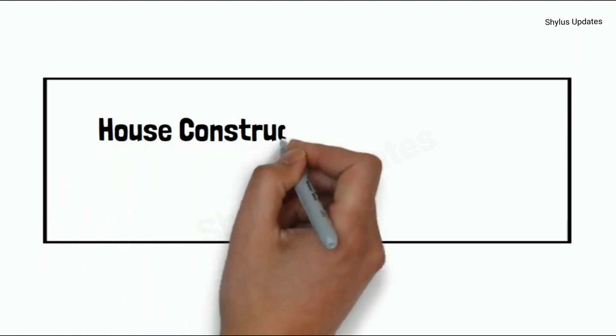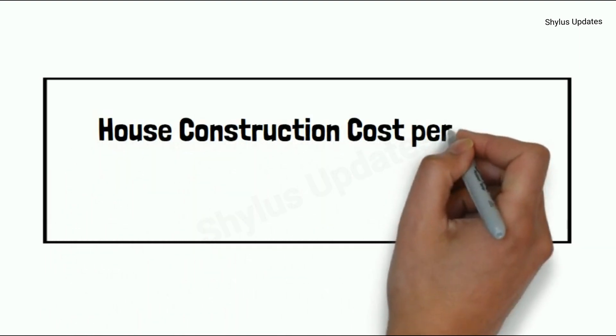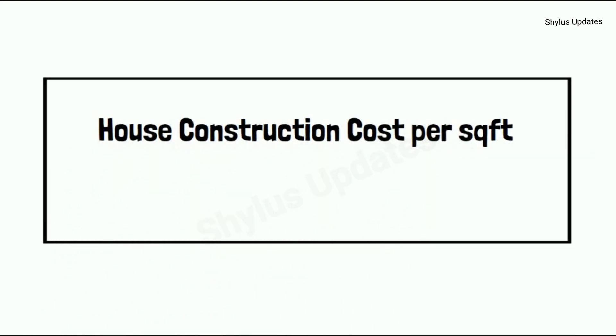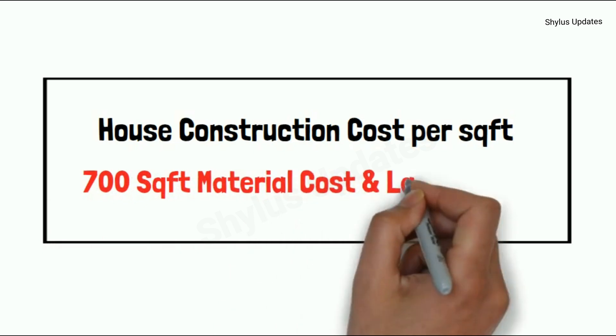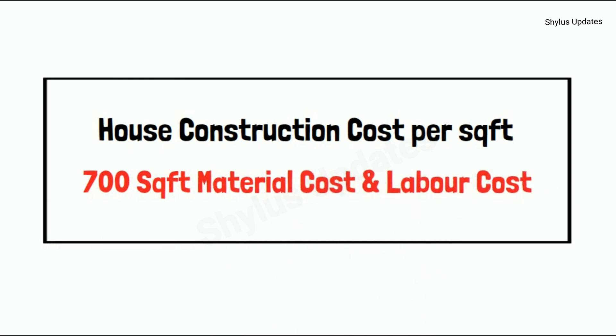House construction cost per square feet — 700 square feet material cost and labour cost.